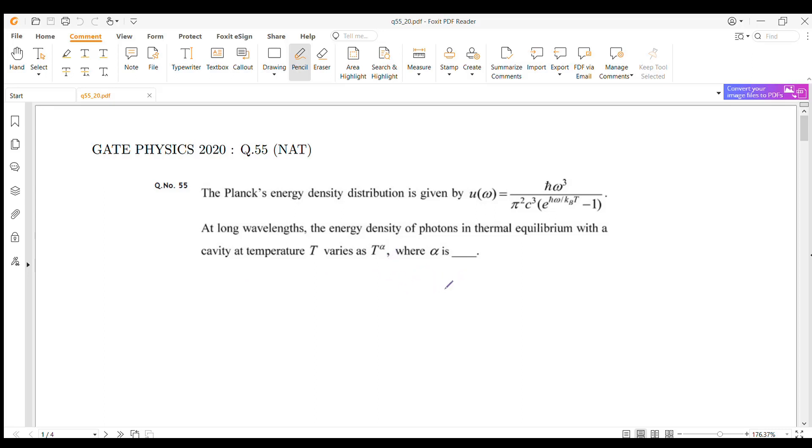We need to find out the value of alpha. Let's solve this question. Here the angular frequency omega is given by 2 pi into nu, where nu is the frequency. Nu is given by c by lambda, where lambda is the wavelength, so omega is equal to 2 pi c by lambda.